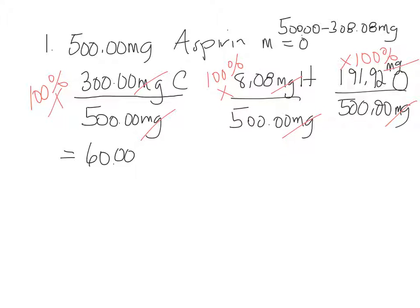So 60, because there's five sig figs, we've got to keep five sig figs. So there's 60%, so 1.616, so 1.62% hydrogen, three sig figs. And oxygen, Kayla? 38.384, so 38.38%.